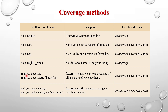The get_coverage method is of real type and its arguments are optional. Without passing arguments we can call get_coverage, and it returns the cumulative or type coverage of all instances of a coverage item. If the cover group has three instances c1, c2, c3, calling get_coverage will combine all three instances and return the cumulative coverage. It can be called on cover group, cover point, and cross coverage. In contrast, get_inst_coverage returns the coverage of the specific instance on which it is called.